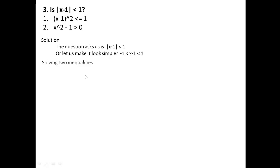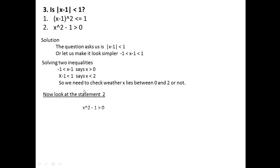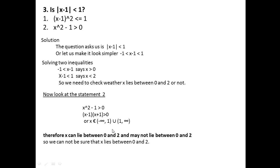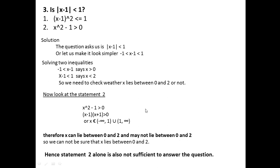Now let us move to statement two: x² - 1 > 0. Factorizing gives (x - 1)(x + 1) > 0, so x belongs to (-∞, -1) union (1, ∞). Again, x can lie between 0 and 2, for example x = 3/2, or x can take value 4, which is not between 0 and 2. So we cannot be sure that x lies between 0 and 2, and statement two alone is also not sufficient.